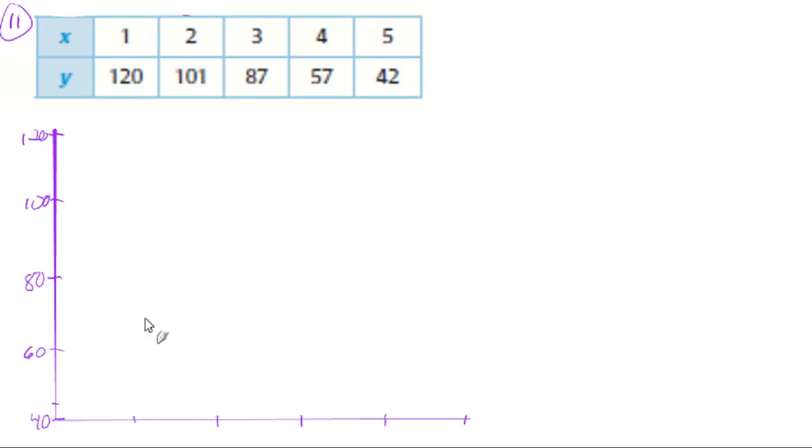So at x is 1, y is 120, so it gives us a point right there. And at x is 2, y is 101, so that'll put us right about there. 3 is 87, so that's going to be right around there, not too far off. 4 and 57, close to 60. 5 and 42, so just real close to right there.